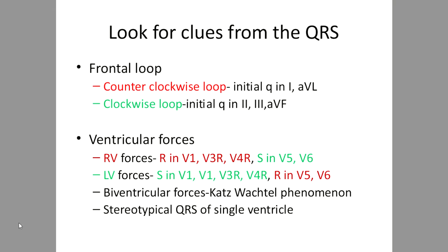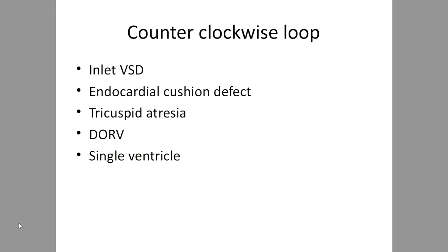Frontal QRS loop and dominant ventricle should be analyzed in every case, especially cyanotic congenital heart disease. Diseases known to cause counterclockwise loop include inlet VSD, endocardial cushion defect, and cyanotic lesions like tricuspid atresia, double outlet right ventricle, and single ventricle. DORV and single ventricle can have an immense variety of presentations, so there is no single classification.